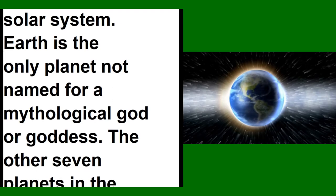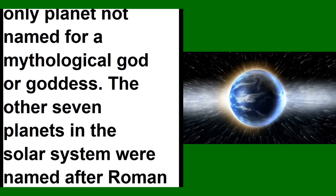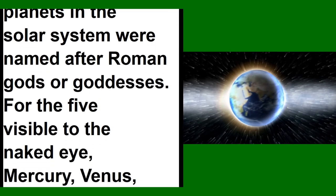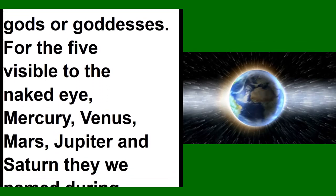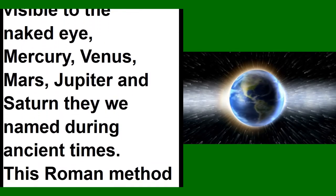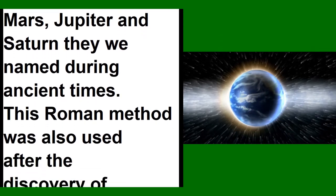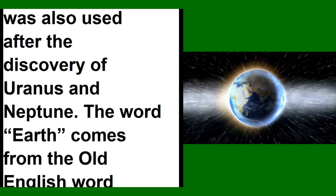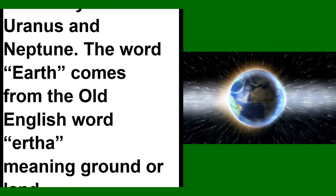Earth is the only planet not named for a mythological god or goddess. The other seven planets in the solar system were named after Roman gods or goddesses. The five visible to the naked eye—Mercury, Venus, Mars, Jupiter, and Saturn—were named during ancient times. This Roman method was also used after the discovery of Uranus and Neptune.